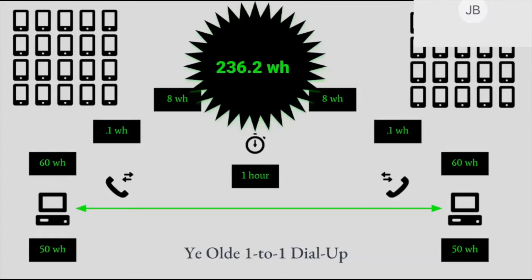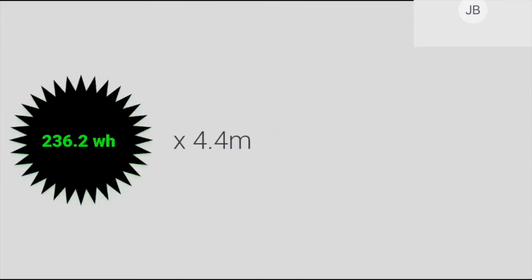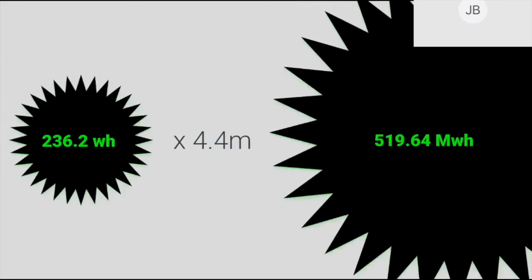What if we paired off every person on the internet in 1995 for a special hour-long Telnet chat with another person on the internet? How much electricity would that take? Here is our 236.2 watt-hour Telnet call times 4.4 million people — which is, according to Cisco, how many people were on the internet at the time. That comes to 519.64 megawatt-hours. One megawatt-hour is roughly equivalent to the electricity used by 330 homes in an hour, so 519.64 of them is like adding 171,481 entire homes to the grid for an hour.